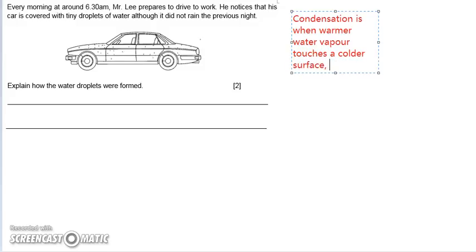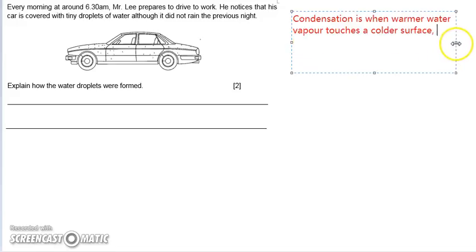When the water vapor touches the colder surface, the water vapor will lose heat and condense into water droplets. We know that water droplets is liquid.